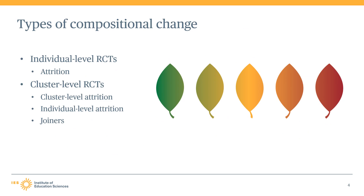In individual-level RCTs, compositional change occurs through sample attrition. Attrition refers to instances where units that were assigned to intervention or comparison conditions leave the study or are otherwise unavailable for outcome measurement.